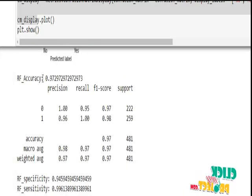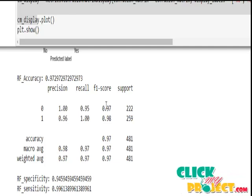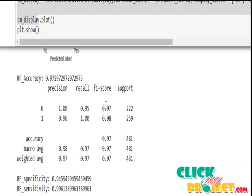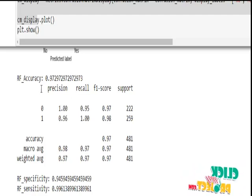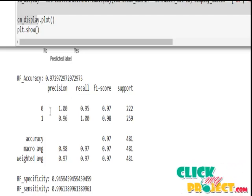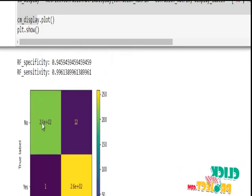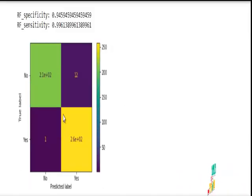After that, we apply the Random Forest algorithm. This gets the highest accuracy, 0.97 or 97 percent. The precision, recall, and F1 score are very high compared with other algorithms. The existing model predicts only 96 percent. We overcome the existing algorithms. The specificity and sensitivity also overcome the existing paper. This is the Random Forest specificity, sensitivity, and confusion matrix.